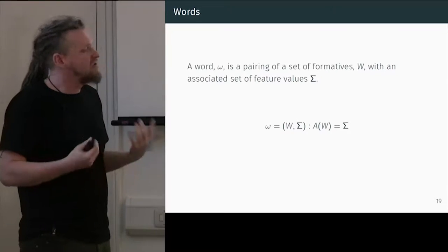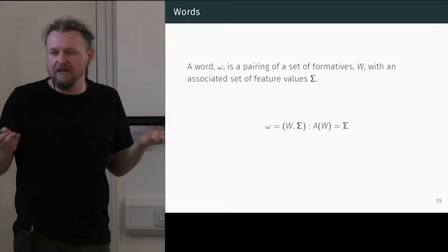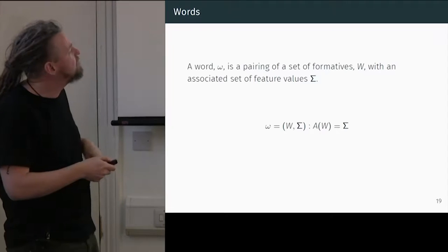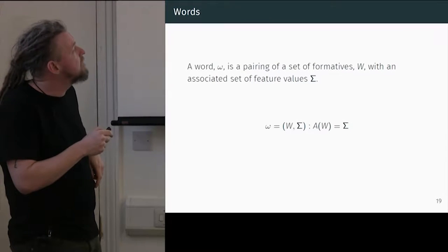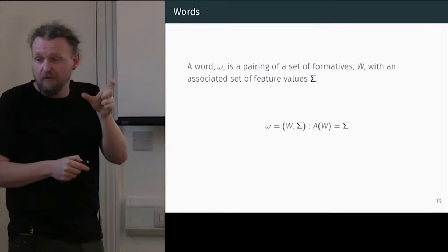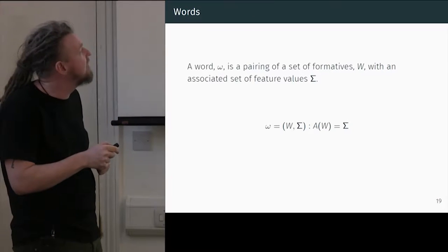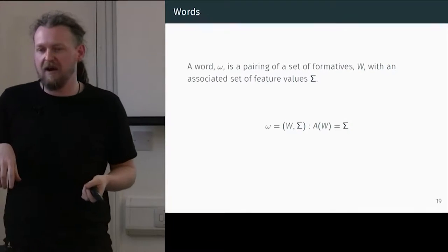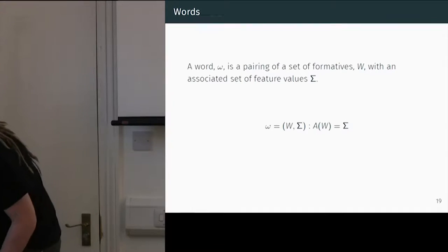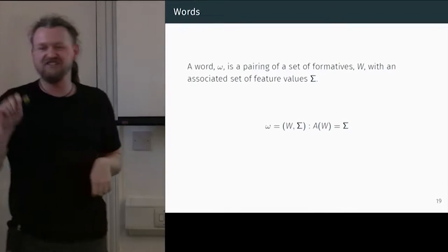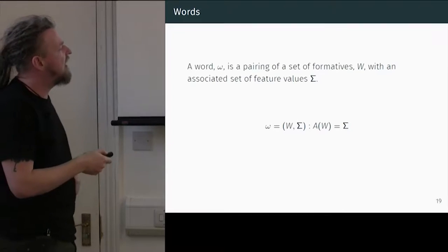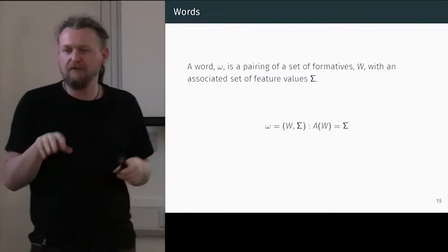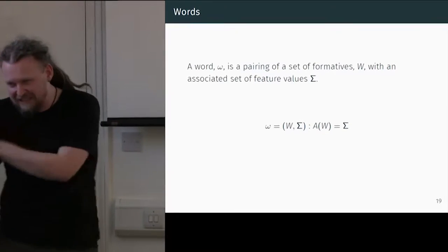The basic assumption is that words are really just pairings of forms and pairings of features. So a word omega is a pairing of a set of formatives — just a whole bunch of formatives listed together as a set, capital W — associated with a set of feature values sigma. The feature values you might think of as a cell in a paradigm: it's just your cell, just the cross-cutting features. We say that these features are associated — not like lexical meaning, but associated with a set of meanings which describe their distributions.